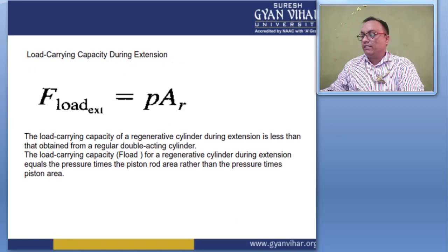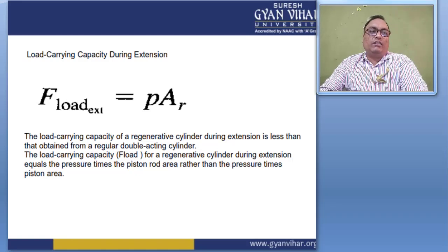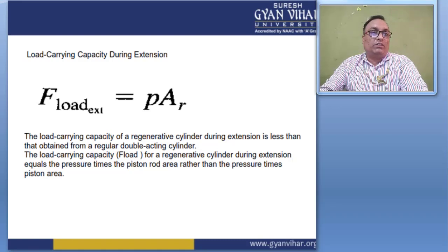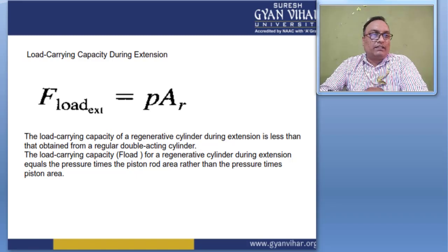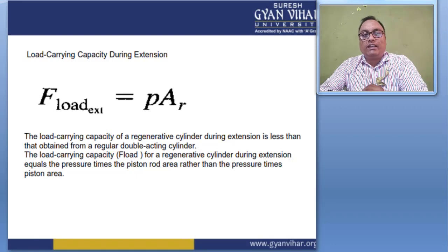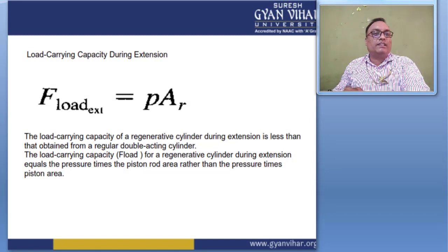Regarding force and load carrying capacity during extension: F_load = P × A. The load carrying capacity of a regenerative cylinder during extension equals the pressure times the piston rod area, rather than the pressure times the full piston area. Therefore, the load carrying capacity during extension is less than that obtained from a regular double acting cylinder.